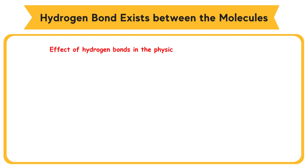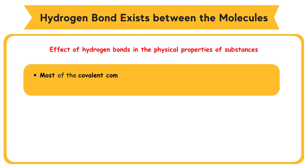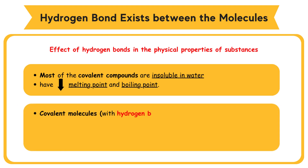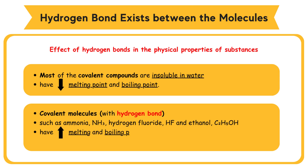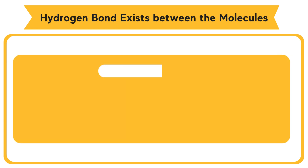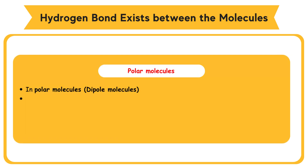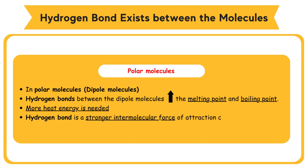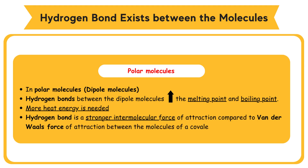Effect of Hydrogen Bonds on physical properties of substances: most covalent compounds are insoluble in water and have low melting and boiling points. However, covalent molecules such as ammonia NH3, hydrogen fluoride HF, and ethanol C2H5OH have higher melting and boiling points and are more soluble in water due to hydrogen bonding. The presence of hydrogen bonds between dipole molecules increases the melting and boiling points. More heat energy is needed to overcome the hydrogen bond. Hydrogen bond is a stronger intermolecular force of attraction compared to Van der Waals forces between molecules of a covalent compound. Hence, the melting point is higher than other simple covalent molecules.